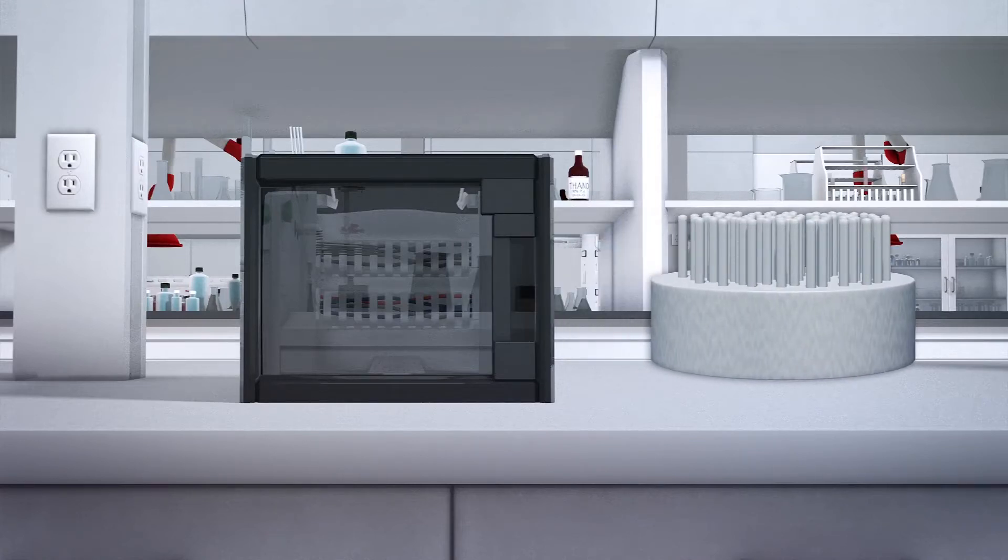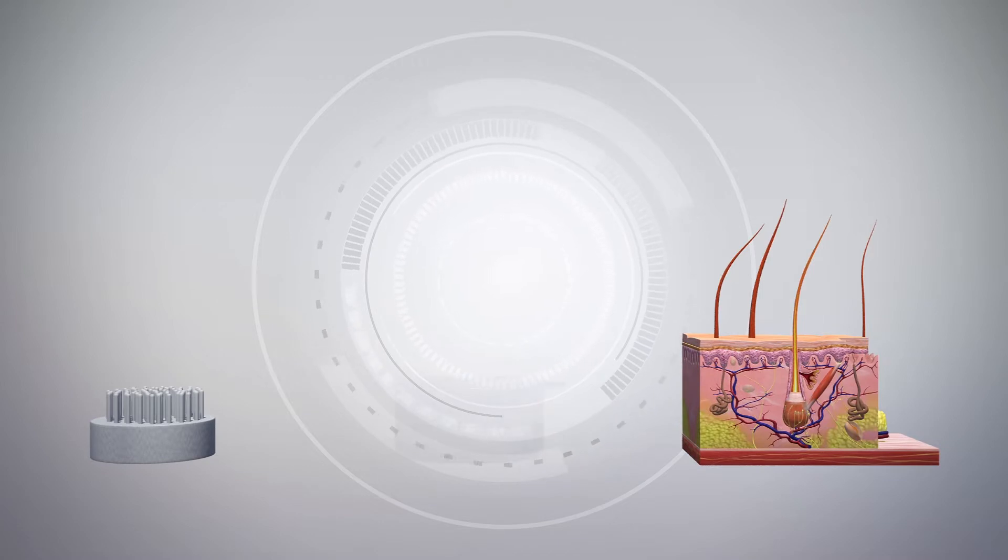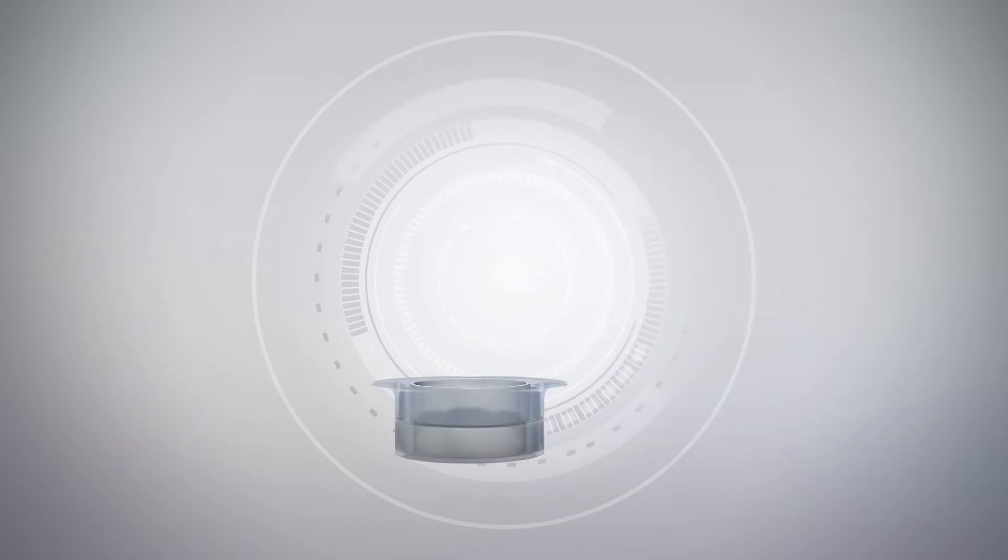According to a Columbia University news release, researchers used 3D printing to create a plastic mold with long, thin extensions half a millimeter wide and designed to mimic the natural microenvironment of human hair cells.